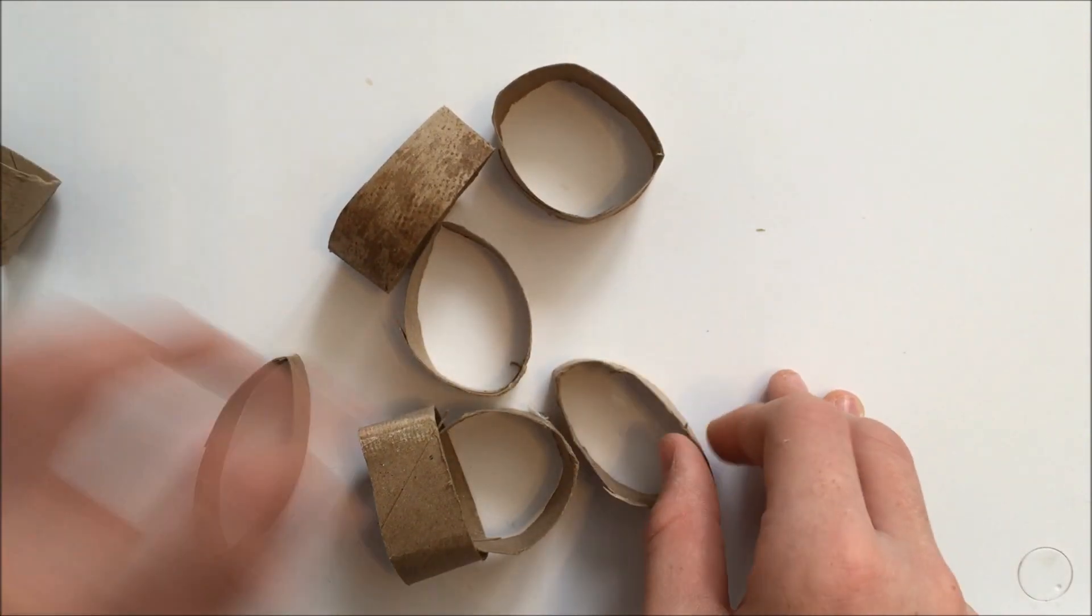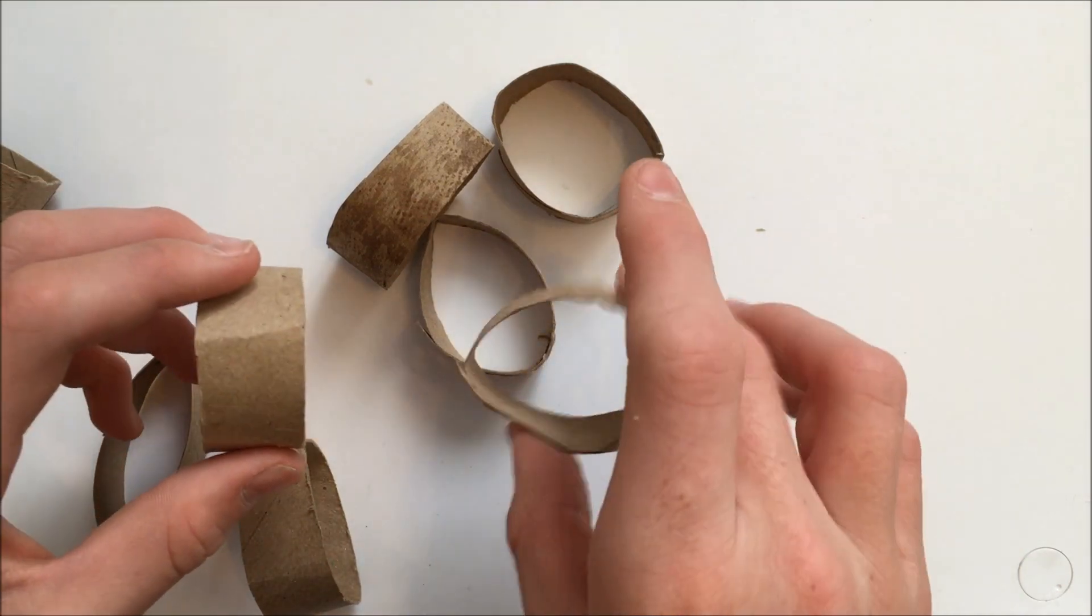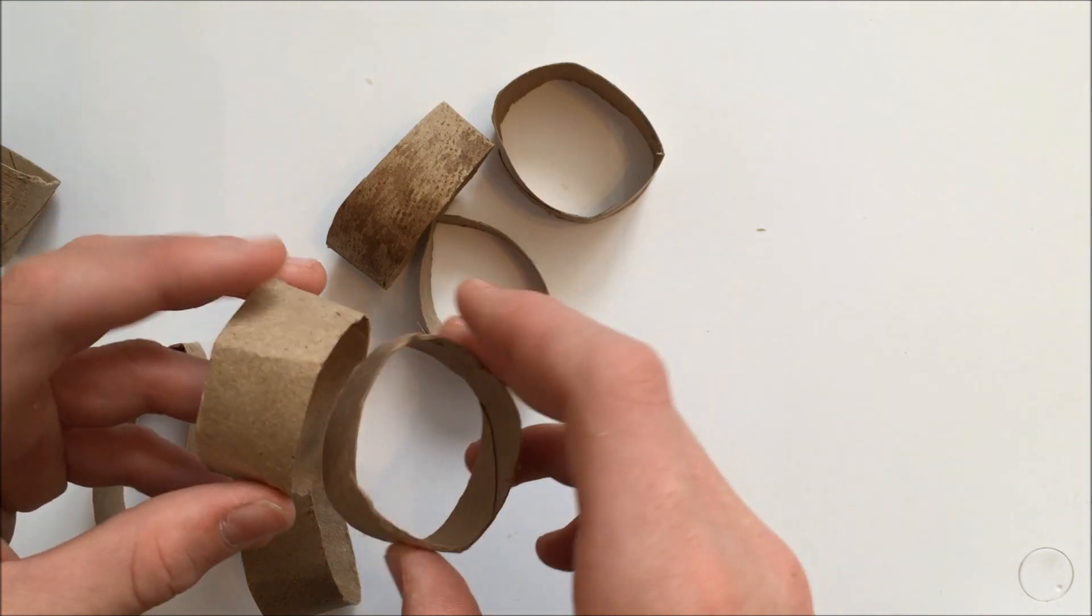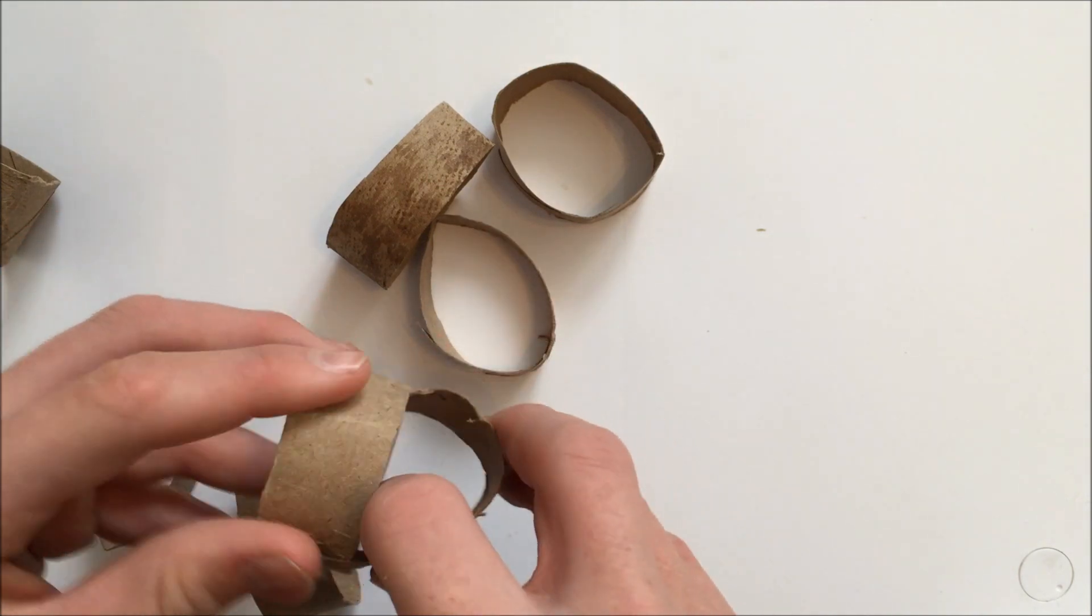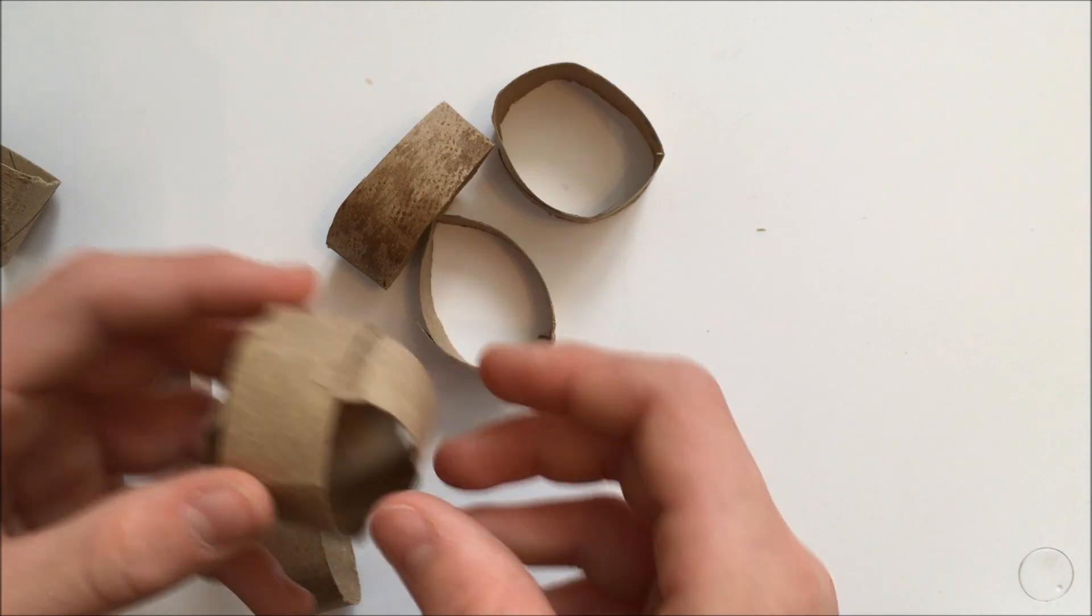So the first thing I'm going to do is I'm going to take one. And then I'm going to take another one. And make sure they're all in the circle form, so just reshape them. And then I'm going to put it in the other way of this one. So I'm just going to stick this one in this way. Just like that.